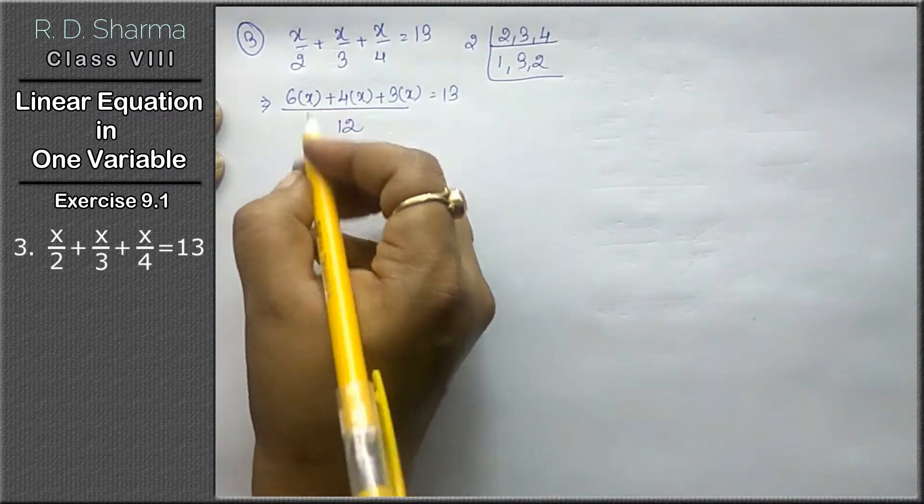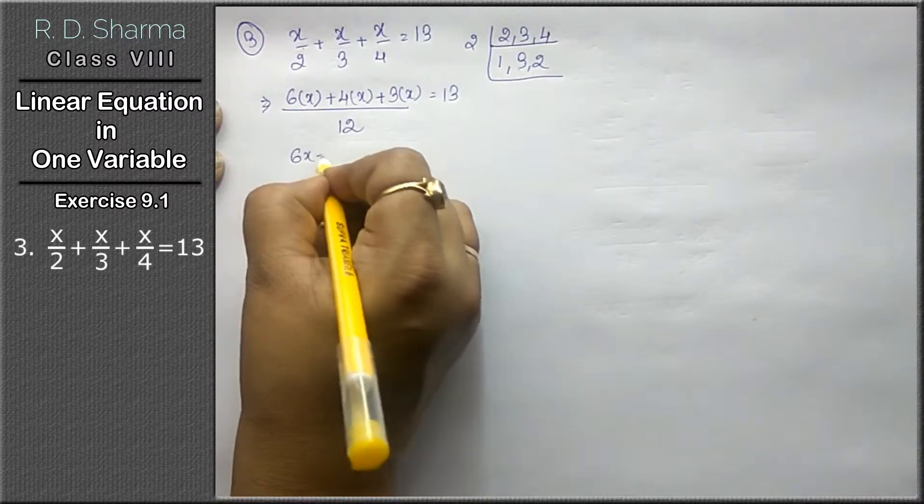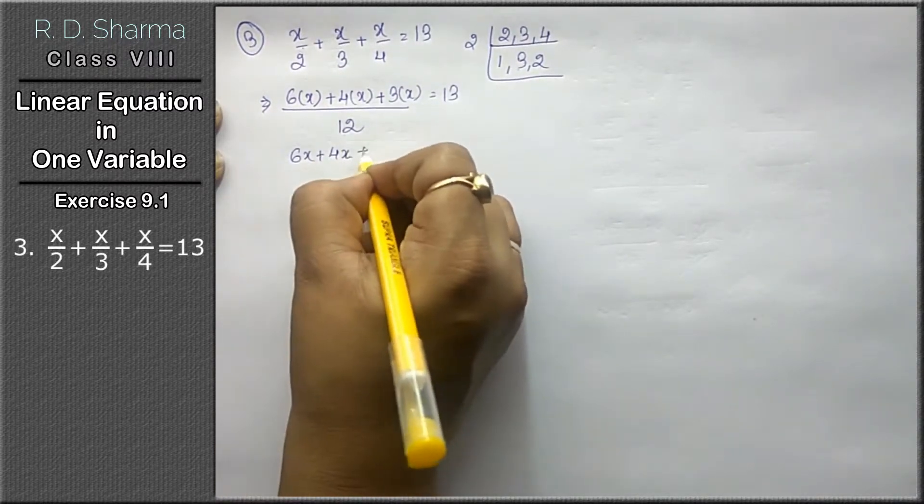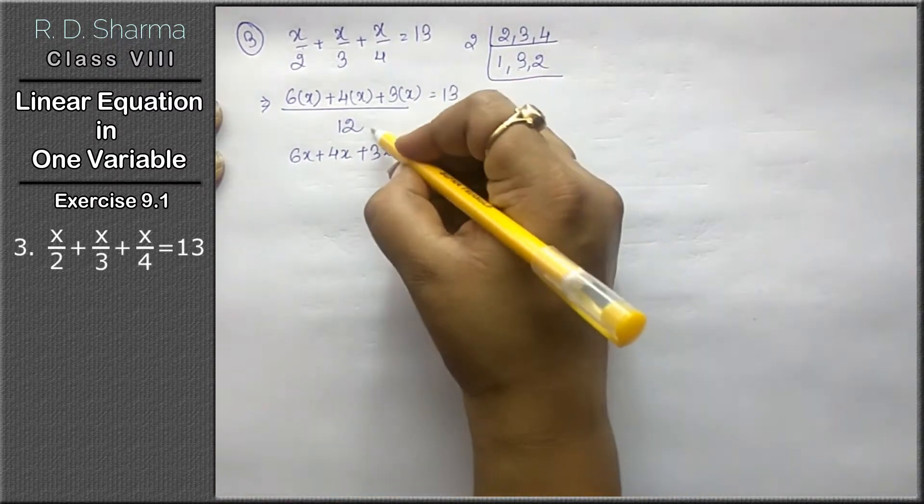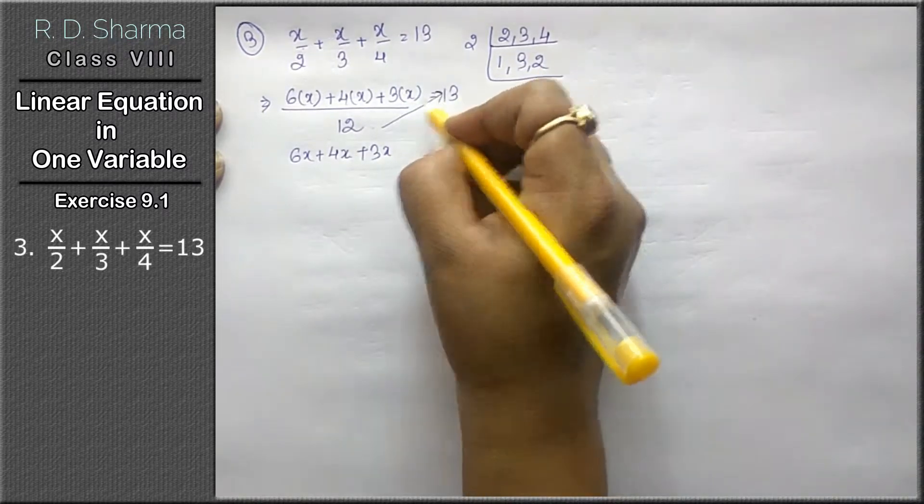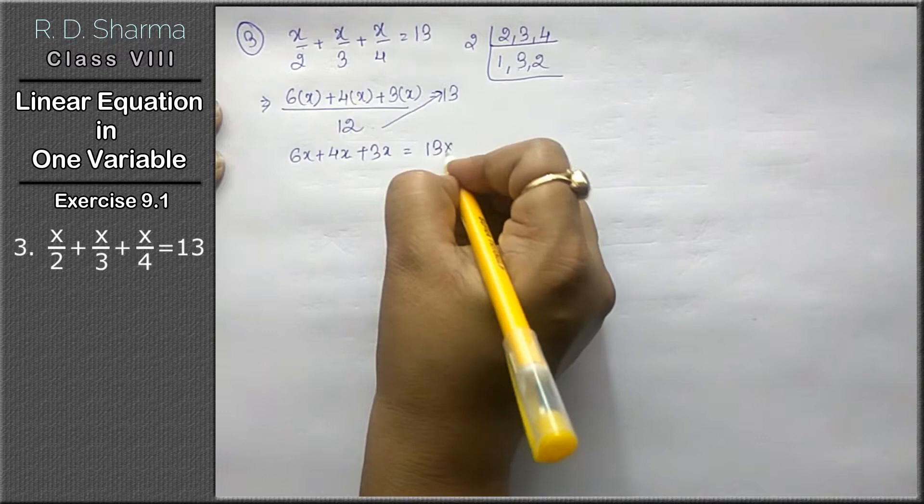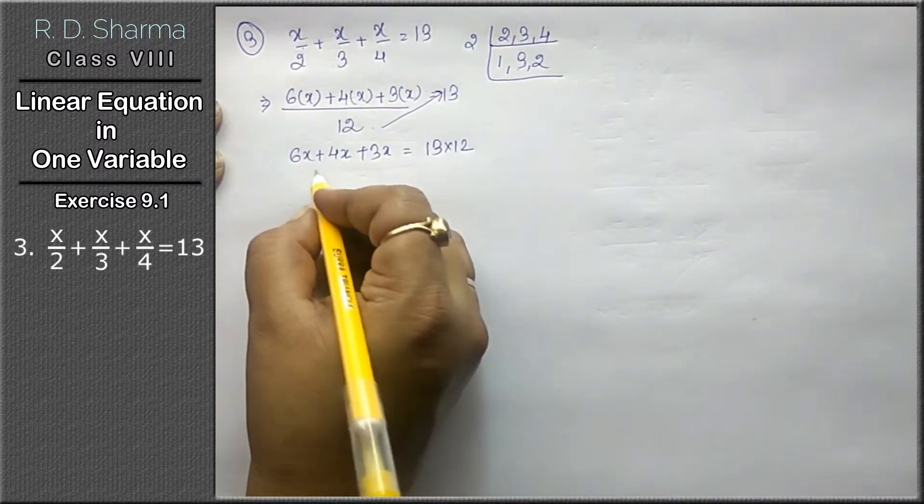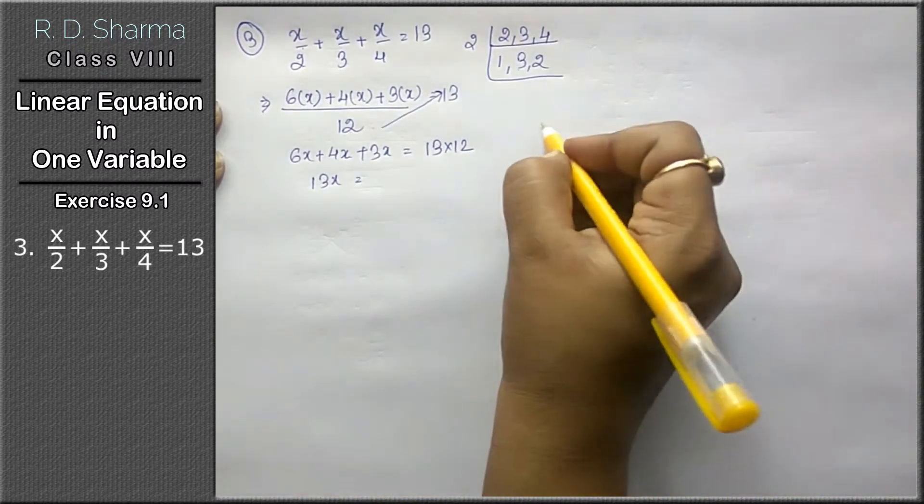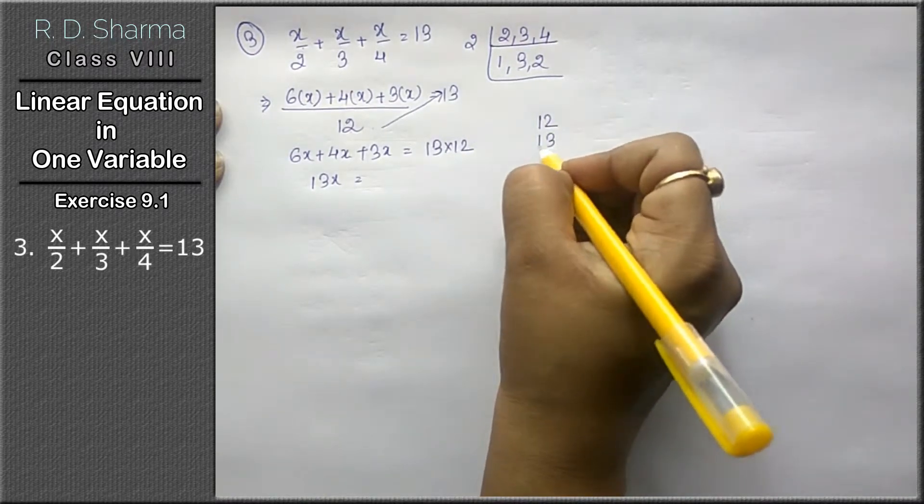Now 6x plus 4x plus 3x. This 12 will go to the other side because here we will multiply it in division, so 13 into 12. 13x equals to 12 into 13.